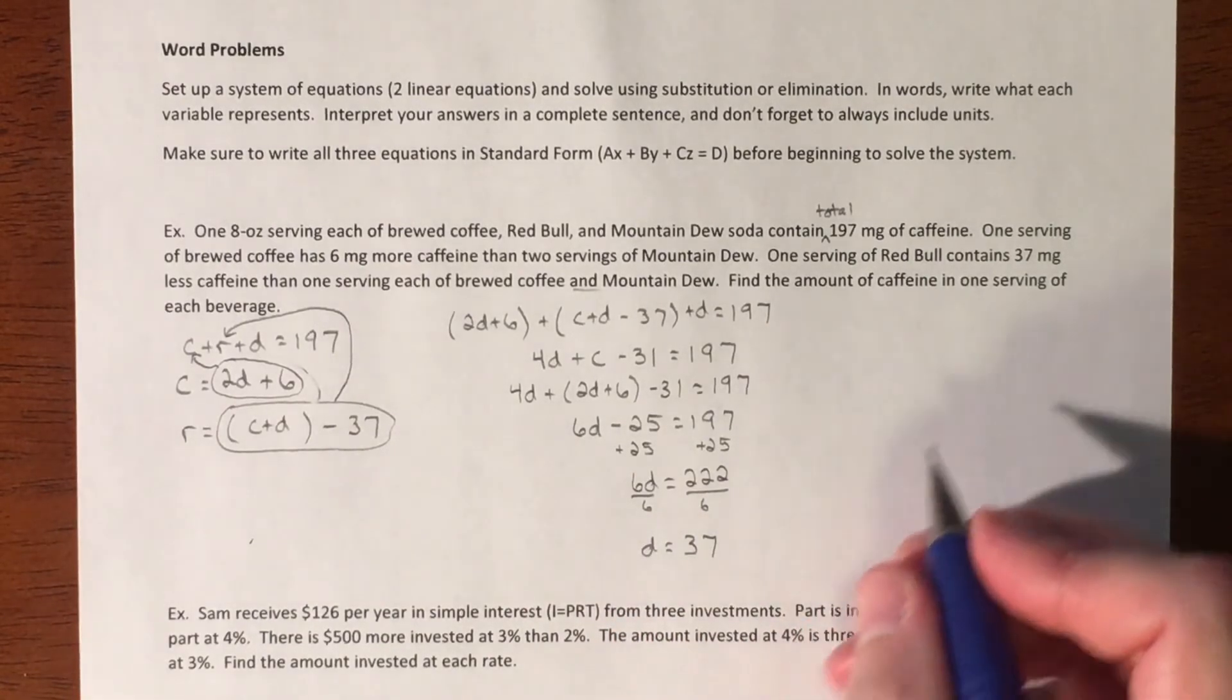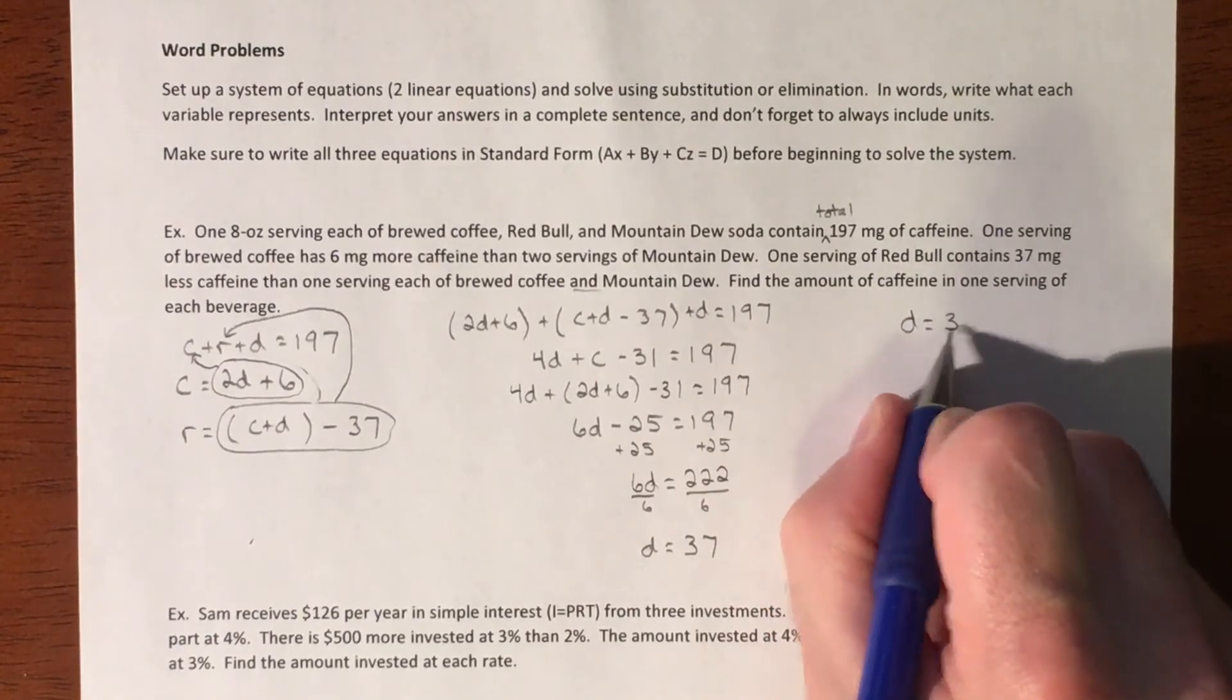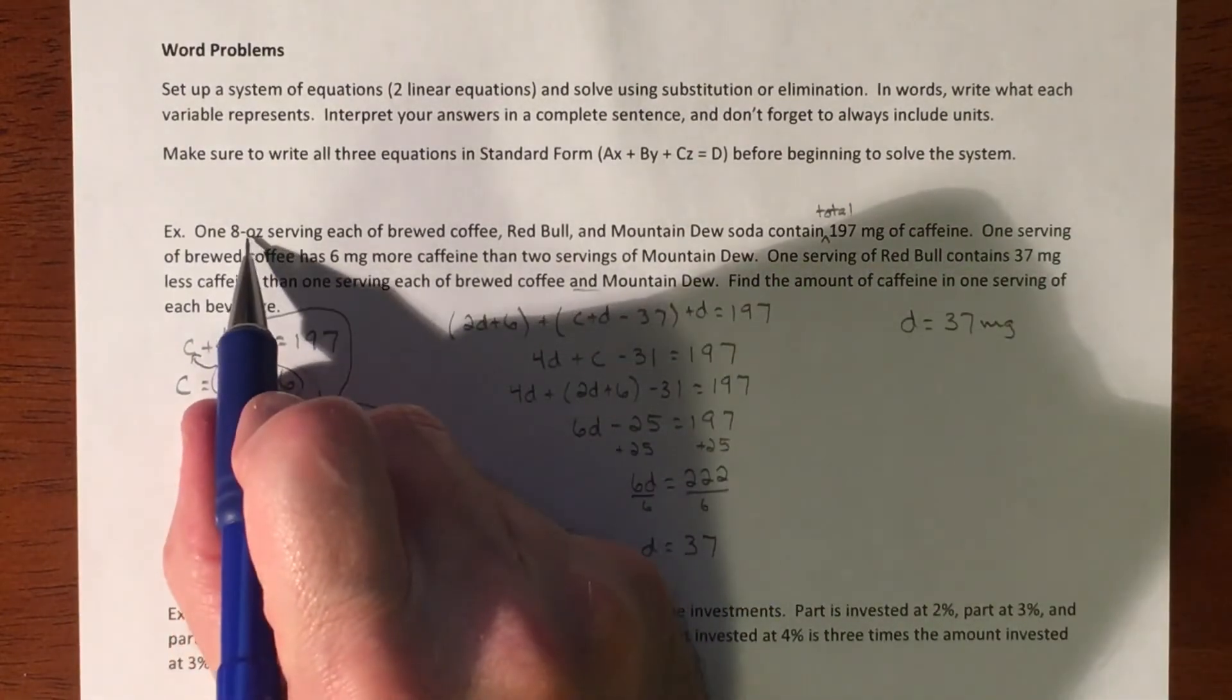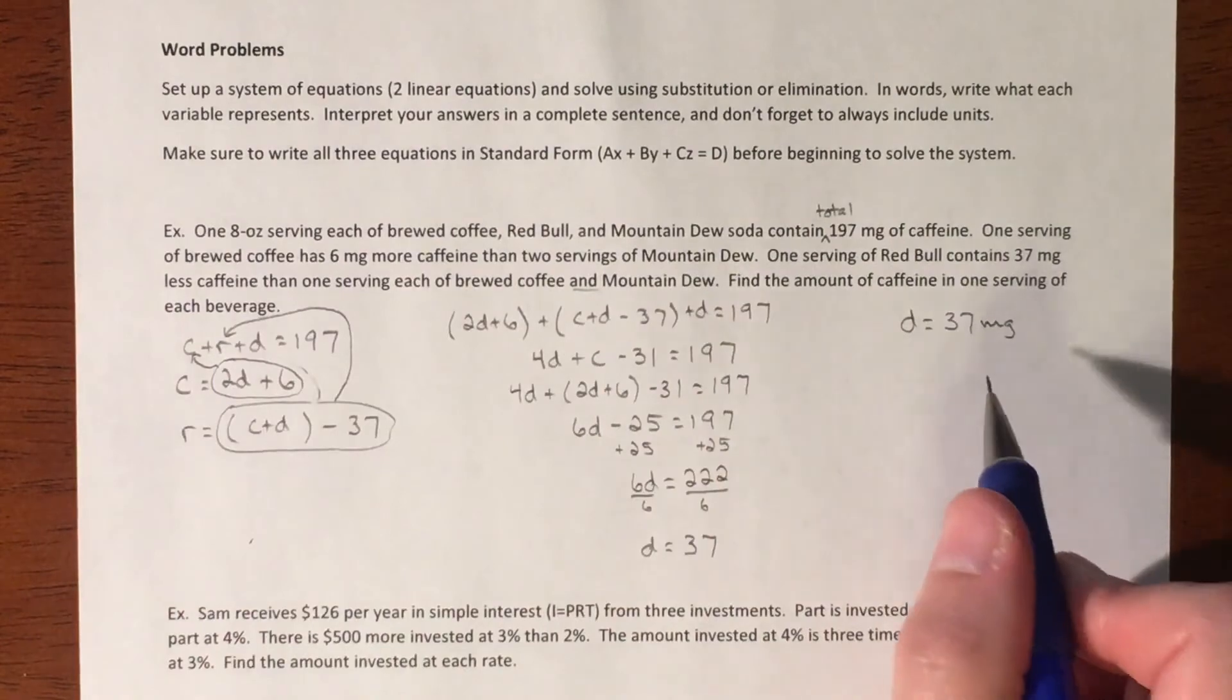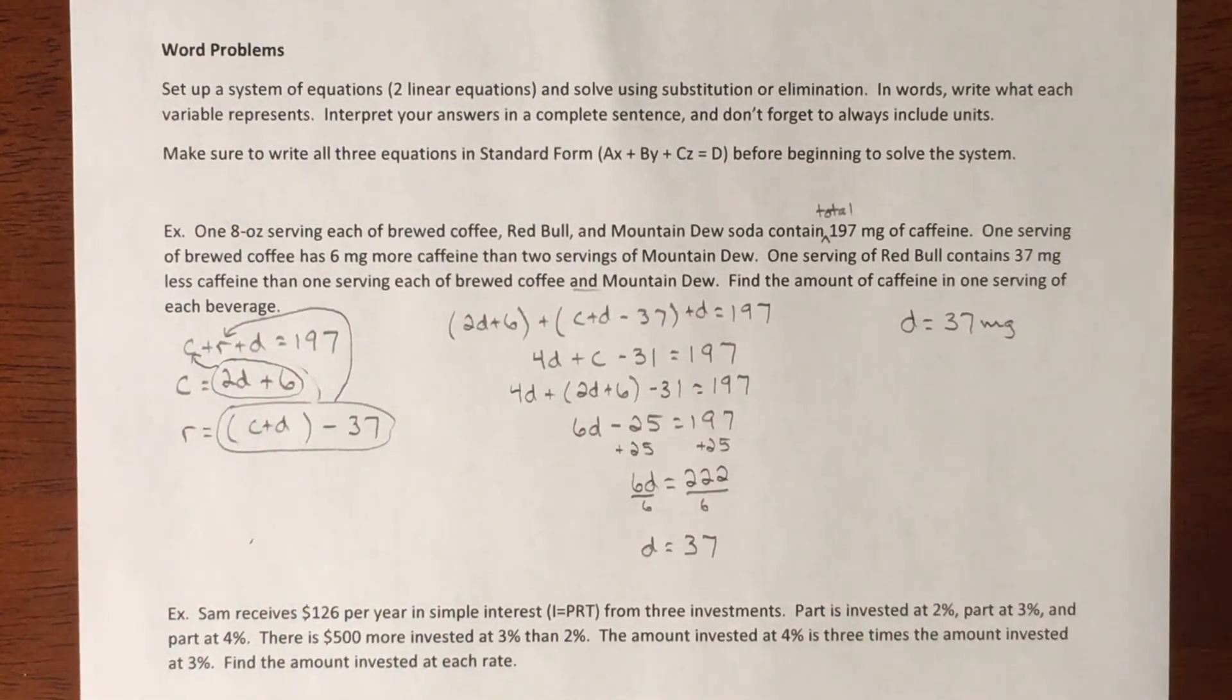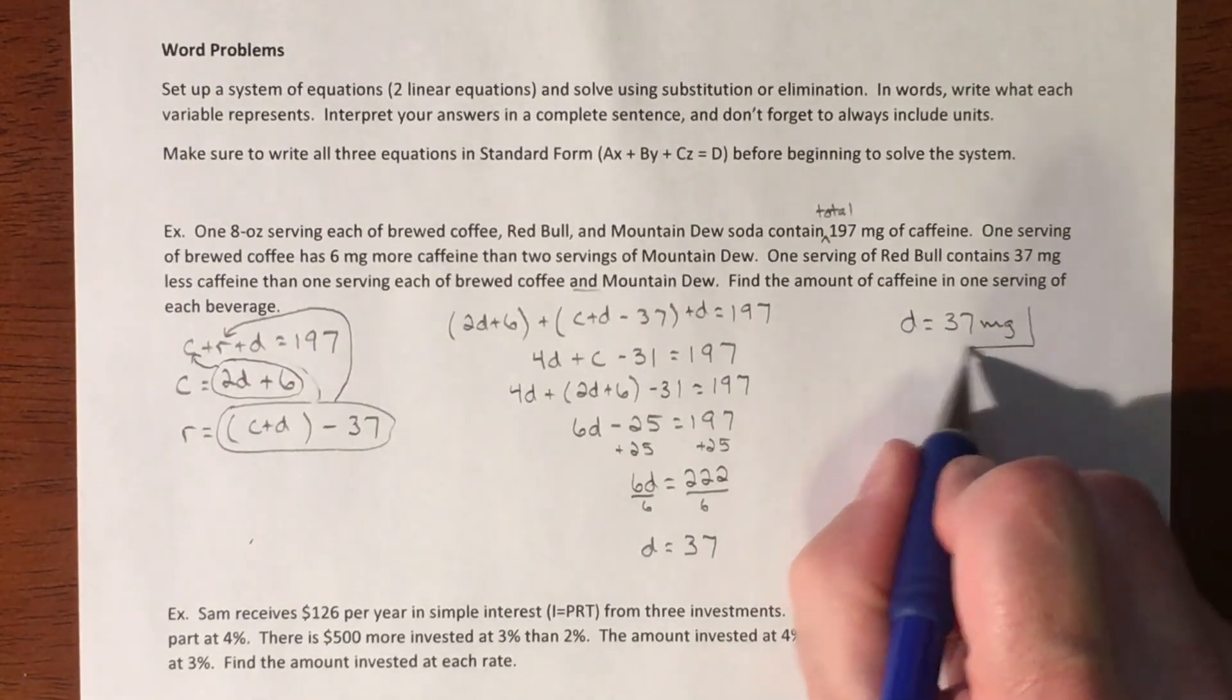So that means we have for our Mountain Dew, 37 milligrams of caffeine, but in an eight ounce. So if you actually look at a can of Mountain Dew, I think it is proportional to that. So I think it ends up being double that because it's 16 ounces, 12 ounces. But there's your Dew.